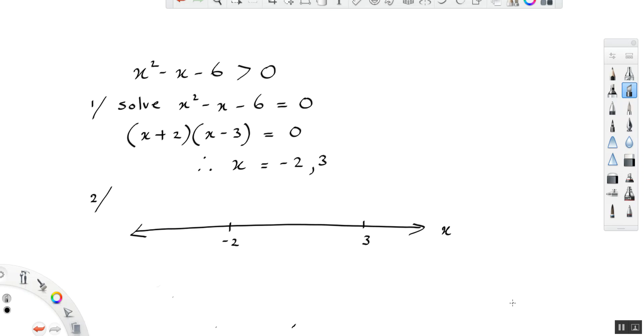Now, we need to test each of these three regions. So I'm going to pick a value for x to test. I'm going to pick an easy one, 0. Let's see what happens. When we substitute 0 into x squared minus x minus 6, we get 0 squared minus 0 minus 6.